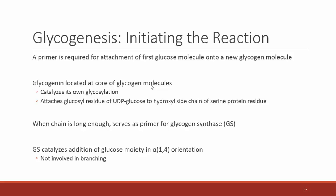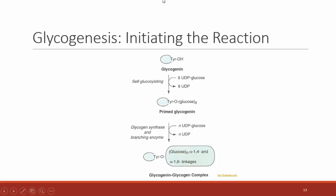A serine residue in the glycogenin protein attaches a glucose residue from a UDP-glucose. Then glycogen synthase forms a complex with this glucose bound to the glycogenin, and the polysaccharide chain is extended by transferase activity until it reaches a certain number of glucose molecules. The take-home message is: you need the primer glycogenin, which catalyzes its own glycosylation, then glycogen synthase takes over adding 1,4-linkages, and ultimately the branching enzyme adds branches. Here we see primed glycogenin encountering glycogen synthase and branching enzymes to start building the glycogen molecule.